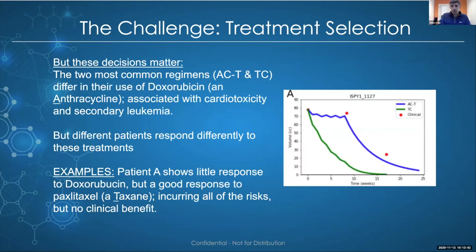Women seeking second or third opinions find this routinely. These decisions really matter because not all patients respond the same way to different drugs, and different drugs have very different risk profiles. Two common regimens, ACT and TC, differ in their use of the anthracycline doxorubicin, which is associated with cardiotoxicity and secondary leukemia. While shown to give benefit over large patient populations, some individual patients don't respond well at all.